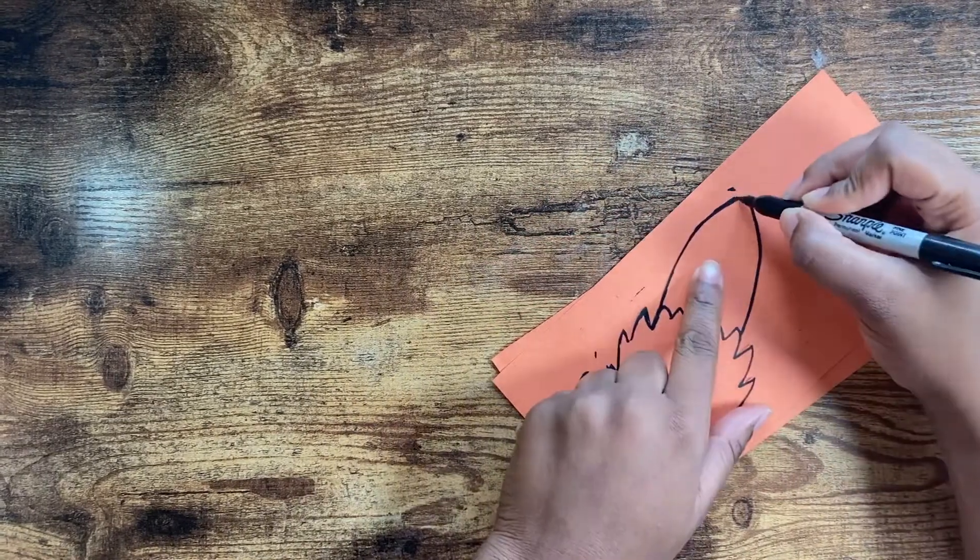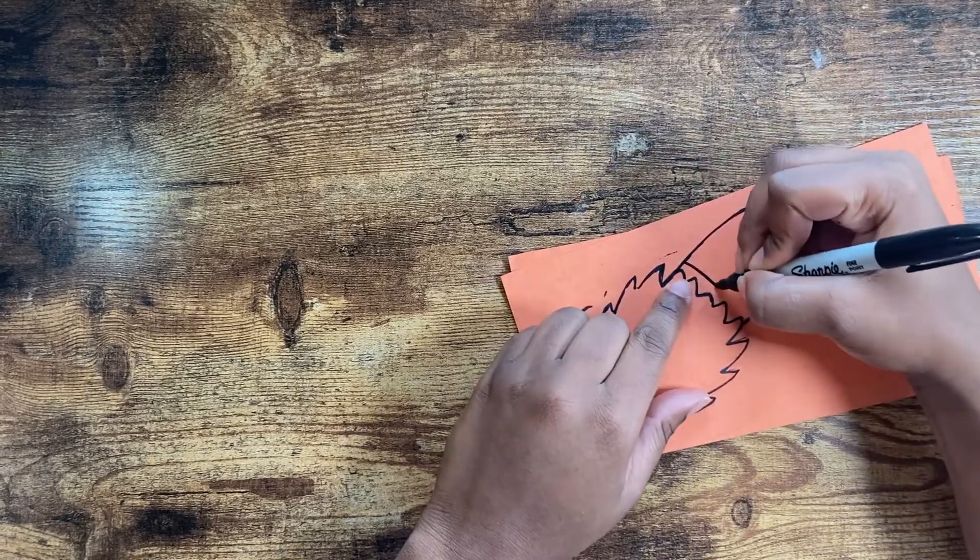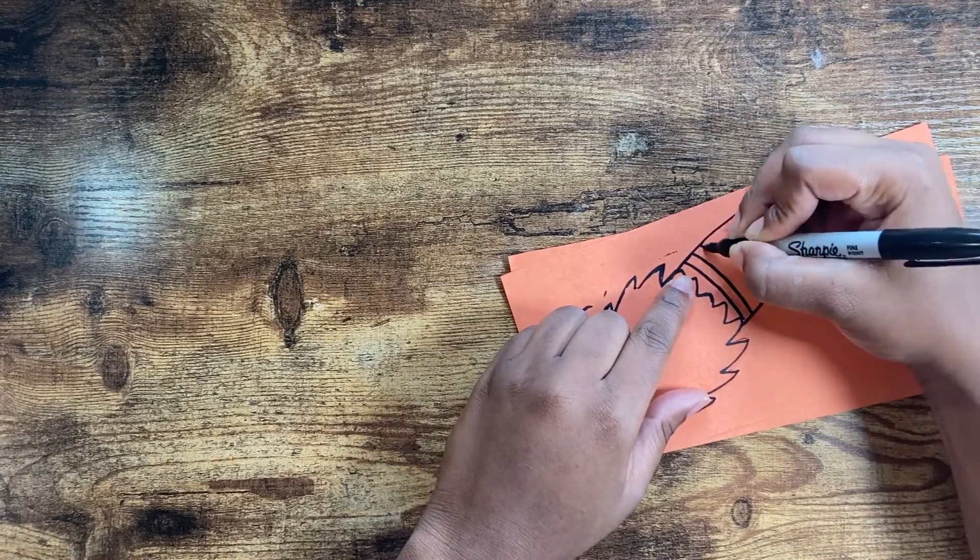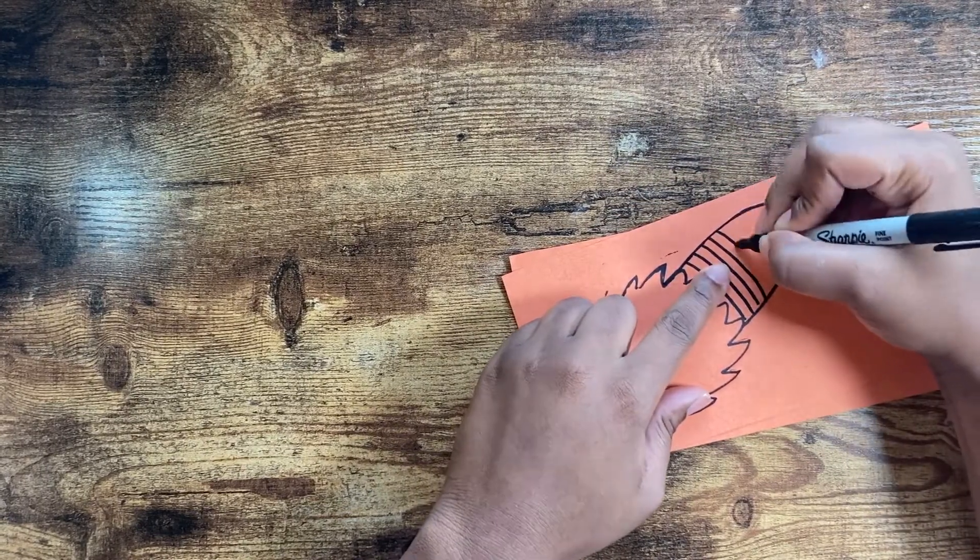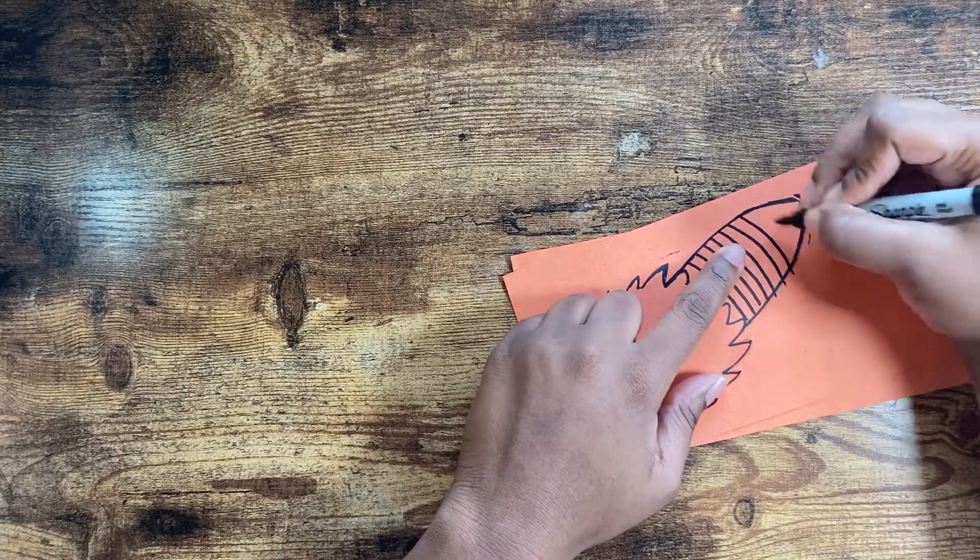All right, now let's finish outlining the abdomen. Did you know that insects have three parts of their body: the head, the thorax, and the abdomen? So right now I'm drawing lines on the abdomen of this insect.